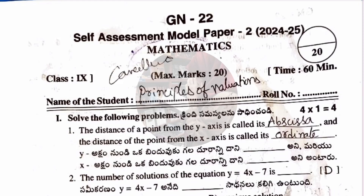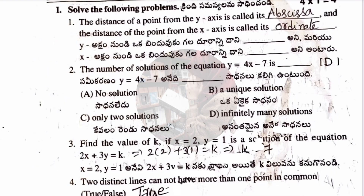Bismillahirrahmanirrahim. So guys, in this video we are going to discuss 9th class mathematics full question paper — that is self-assessment model paper 2 — full question paper with answer key. At the end you are going to have the answer key of this entire question paper. Just check it out whether you have written correct or wrong, and please share it with your friends so that they also check out their answers. I hope this video is helpful. Please subscribe. Thank you so much.